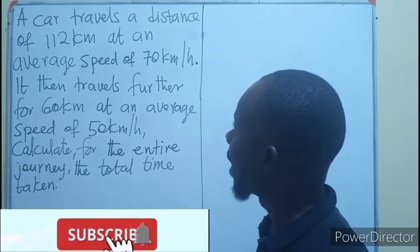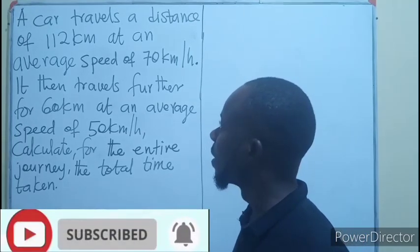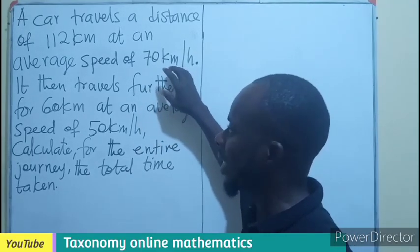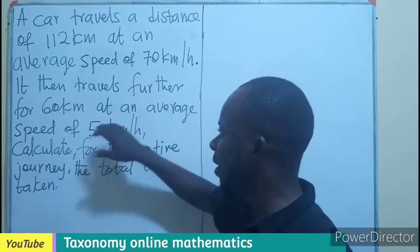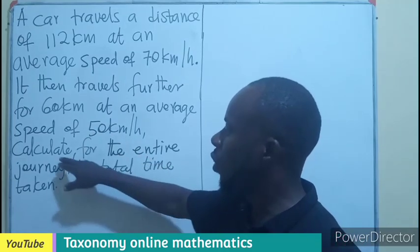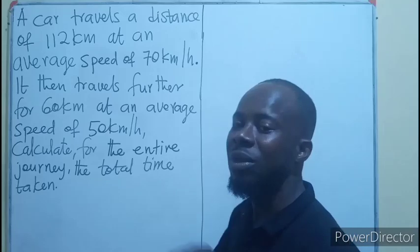A car travels a distance of 112 kilometers at an average speed of 70 kilometers per hour. It then travels further for another 60 kilometers at an average speed of 50 kilometers per hour. We have to calculate for the entire journey, the total time taken.